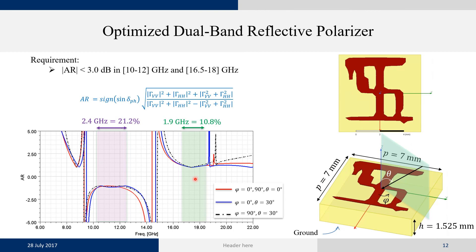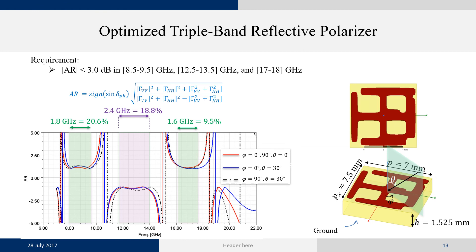After the success of the dual-band polarizer, we challenged the optimizer to design a triple-band polarizer, requesting 1 GHz of bandwidth in each band and orthogonality of reflected CP waves in each pair of adjacent bands. The resulting structure, while resembling a Jerusalem cross, is distinctly different, and it achieved more than the 1 GHz bandwidth requested while maintaining angular stability and CP orthogonality.